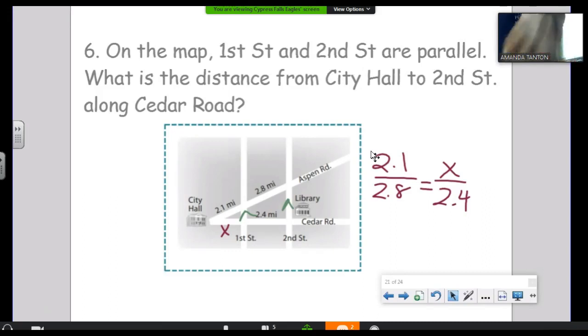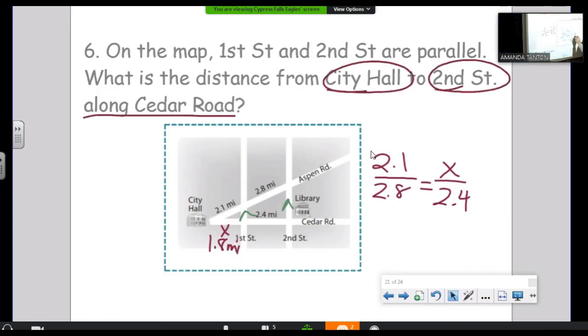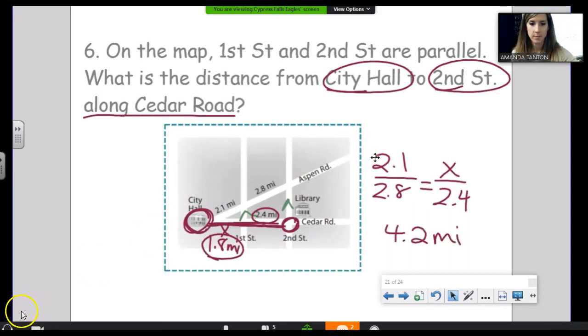But you read the directions. You make sure you found what it asks for. What's the distance from City Hall to 2nd Street along Cedar Road? City Hall to 2nd Street along Cedar Road. So it wasn't asking for 1.8 as the answer. We have to add this to this, getting 4.2 miles as the final answer.